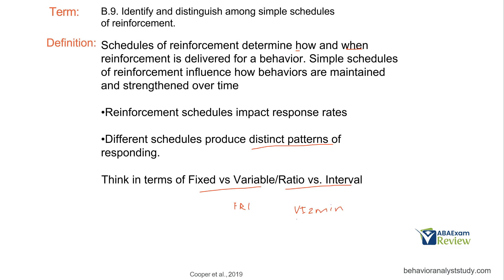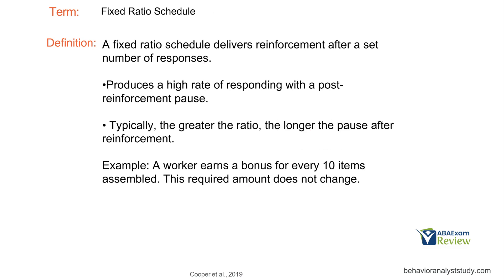We need to know what V, I, S, and R stand for — if you know that, this becomes very straightforward. A fixed ratio schedule delivers reinforcement after a set number of responses. An FR1 is a continuous schedule where every correct response receives reinforcement. F represents fixed, meaning it's not changing. R represents ratio, meaning we're based on responses. And the number — in this case 1 — indicates the number of responses required, so every single correct response receives reinforcement.